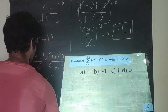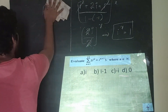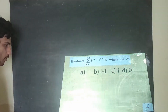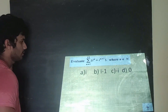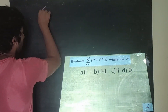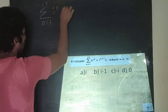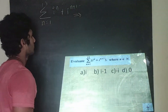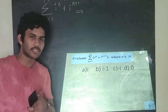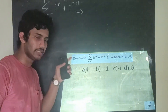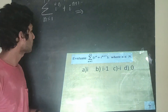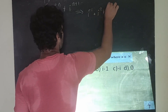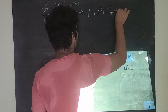Next interesting question — this is why those two properties are super important. Compute: Σ (n=1 to 13) of (iⁿ + i^(n+1)). Expanding the first part: i¹ + i² + i³ + i⁴ + ... + i¹³. And for i^(n+1): i² + i³ + i⁴ + i⁵ + ... + i¹⁴.